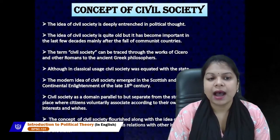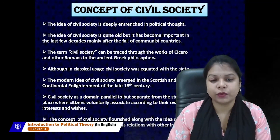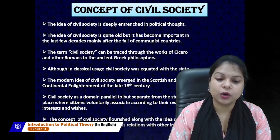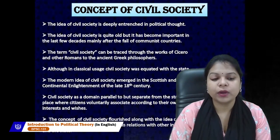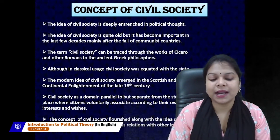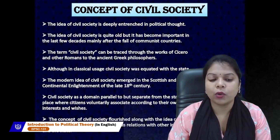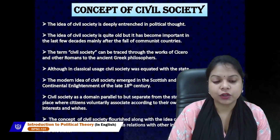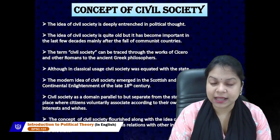The concept of civil society is deeply entrenched in political thought and has become especially important in the last few decades. The term can be traced through the works of Cicero and other Romans to ancient Greek philosophers. In modern thought, civil society emerged in the Scottish and continental Enlightenment in the late 18th century. Civil society has a domain parallel to but separate from the state — a place where citizens voluntarily associate according to their own interests and wishes. The concept flourished alongside the idea of individual rights and relations with other individuals and the state.